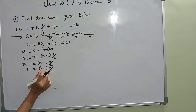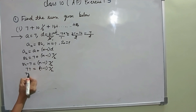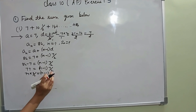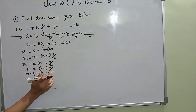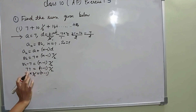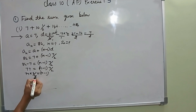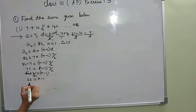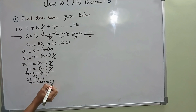I want to find the N value, so I am transferring the fraction to the other side. When 7 by 2 transfers, 2 comes as multiplication and 7 goes as division. 77 into 2 divided by 7 gives 11 twos are 22, equal to N minus 1. So N equal to 22 plus 1, that is 23.